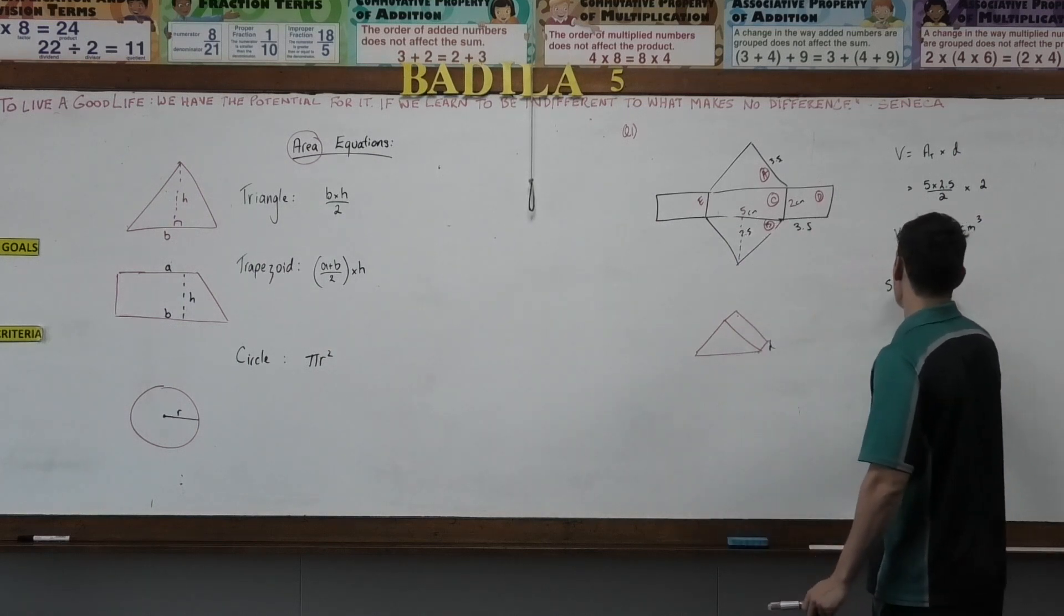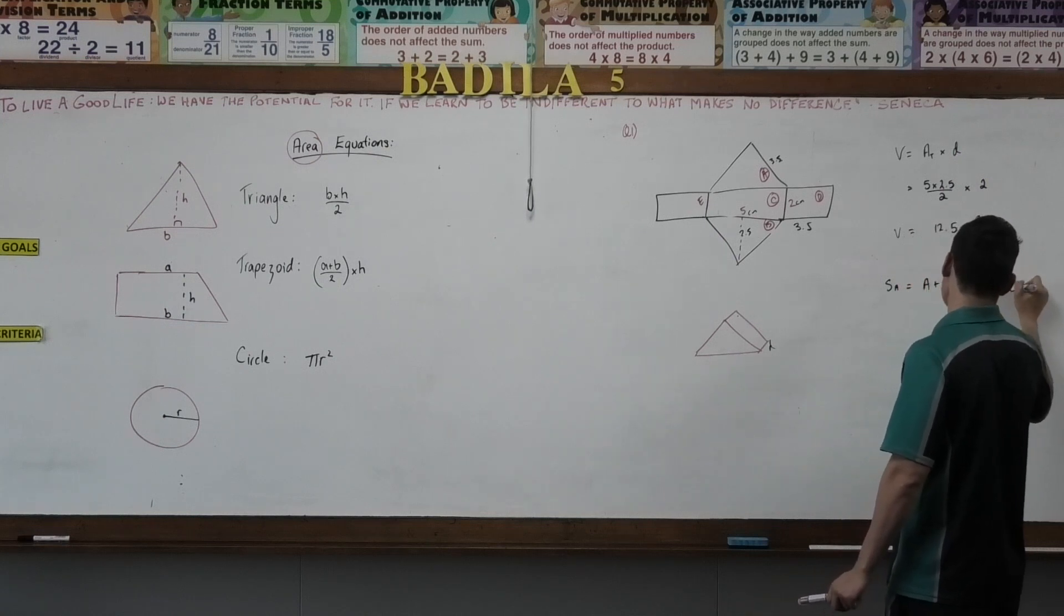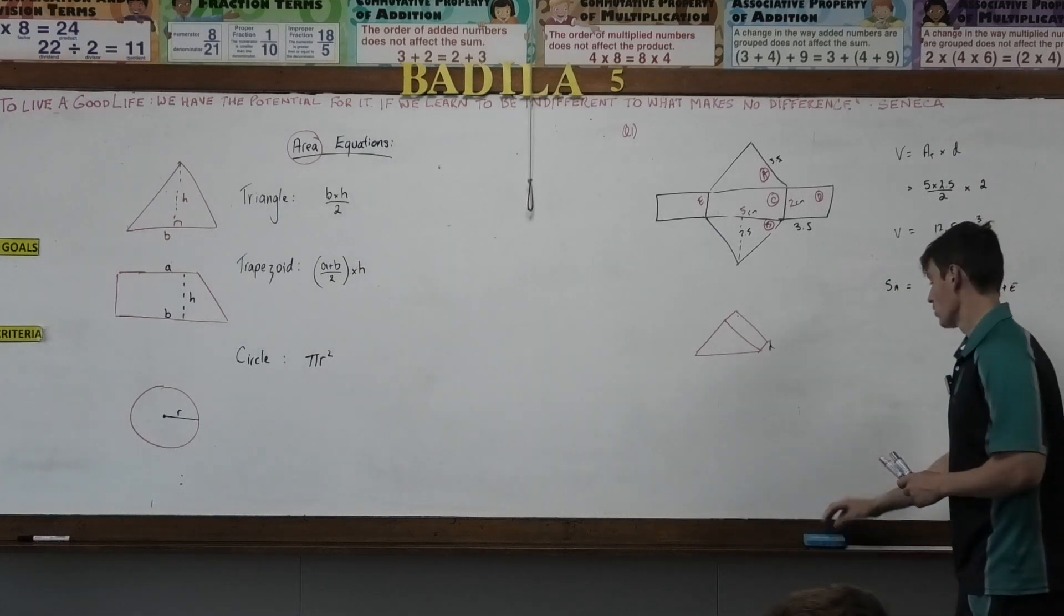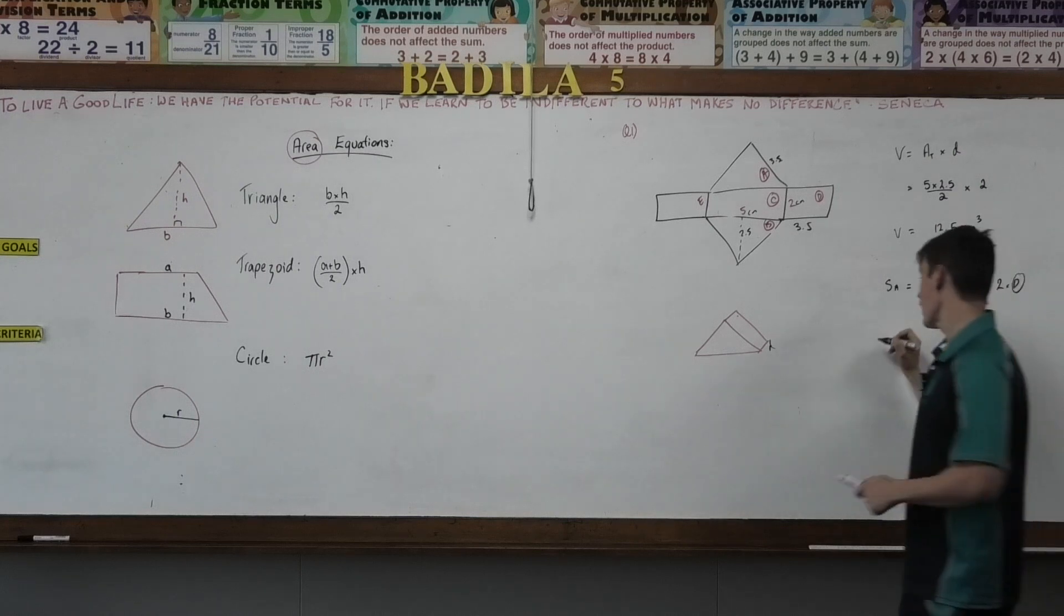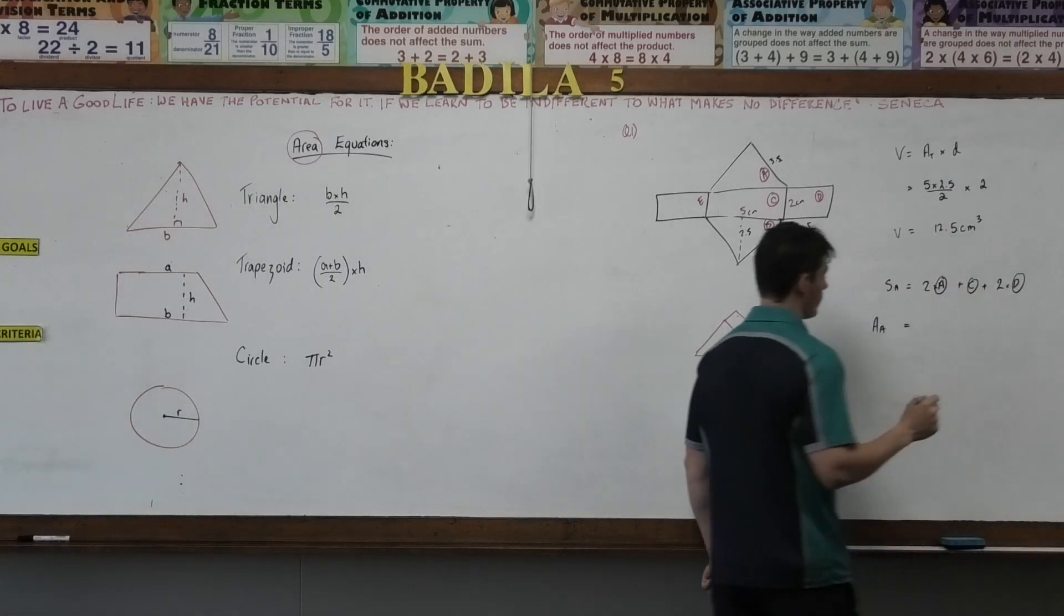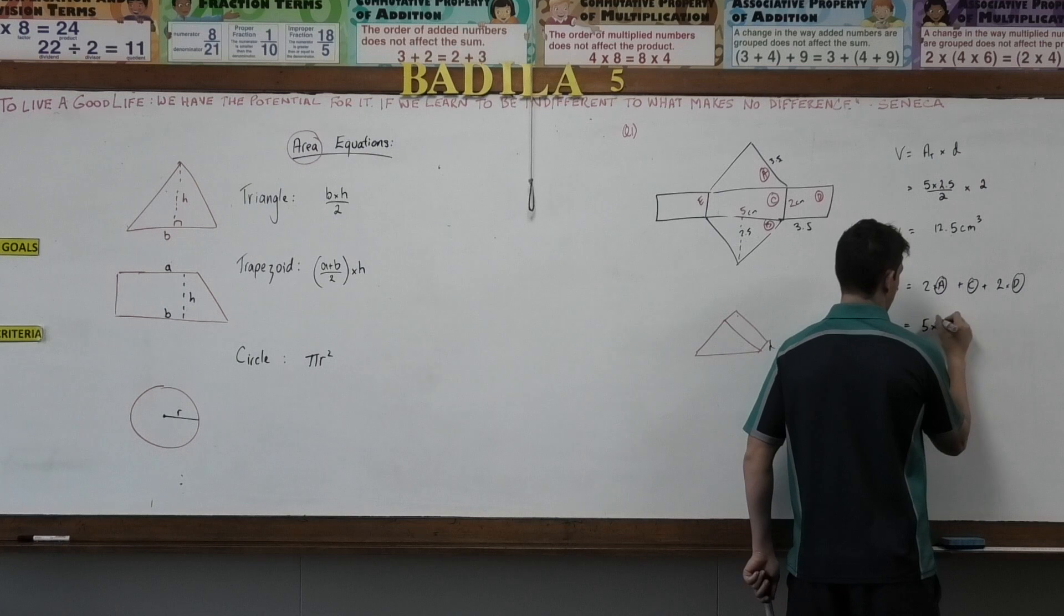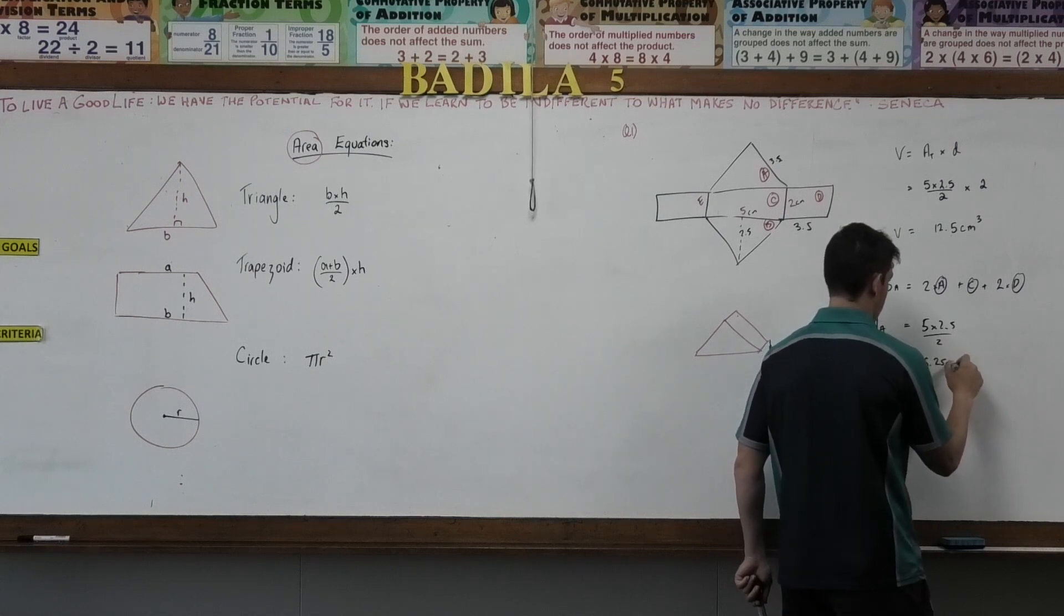My surface area equals area A plus area B plus area C plus area D plus area E. What do I know about area A and B? They're the same, so I can just write 2 times A. What do I know about area D and E? So I can just write 2 times D. So I'm going to find area A first, what's area A equal? Half base times height, 5 times 2.5 divided by 2, which equals 6.25 centimeters squared.